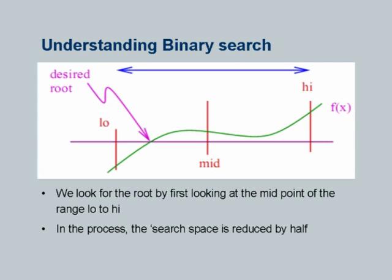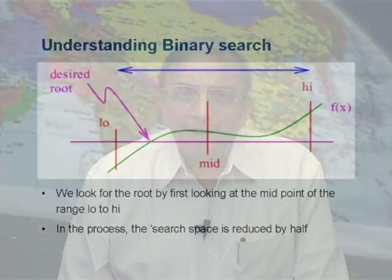Quite independently, after having introduced arrays and particularly sorted arrays — to demonstrate how the search can be faster — this is the way to motivate students to understand binary search. We emphasize that in the bisection method search technique for the root, we look for the root by first looking at the midpoint of the range, and in the process the search space is reduced by half.